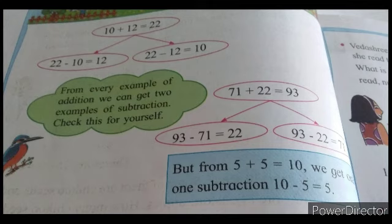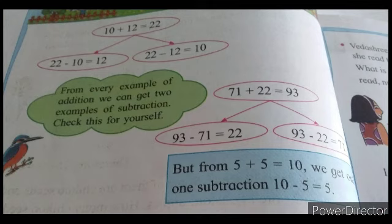See the first example: 10 plus 12. If you do addition, the answer is 22. Now we can prepare two subtraction examples from this. Take the bigger number — out of 10, 12, and 22, the biggest is 22. Now subtract any number: 22 minus 10. The answer is the remaining number, which is 12.